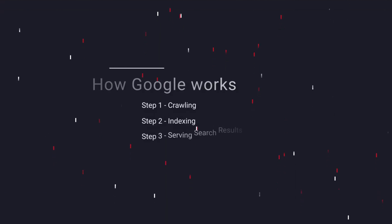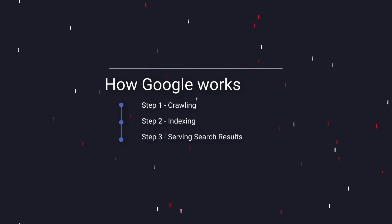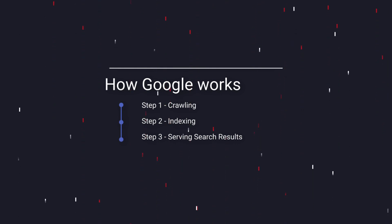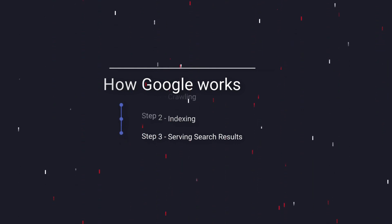Google works in three main ways to serve your website to users, and that's crawling, indexing, and serving search results. So let's take each of those one by one and talk about what it means.